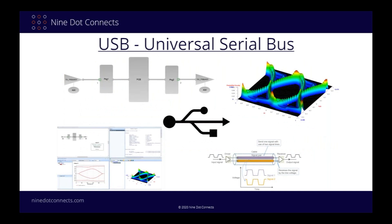To conclude the USB section, I'll show the results of compliance simulations on a default USB 3.1 template provided by SystemSI. As you see in the eye contour, the eye is really closed, indicating this default setup would not pass compliance. The 3D density diagram also shows very little symmetry, indicating a lot of jitter noise. The compliance results summary does confirm that this design would not pass the eye height test. I ended up using the USB section to show more about the concepts and topics of high-speed serial communications, rather than the specifics of the USB 3 protocol and routing requirements — the routing requirements for USB are really just doing proper differential pair routing.